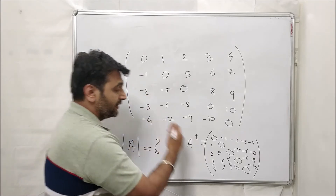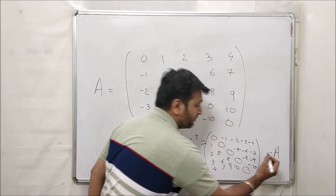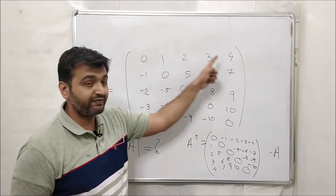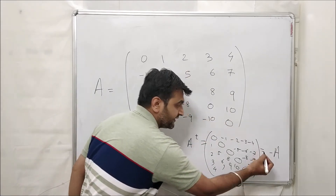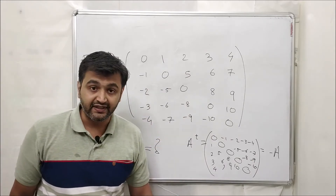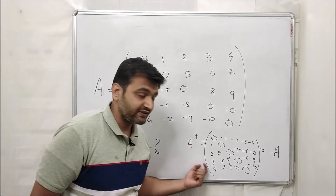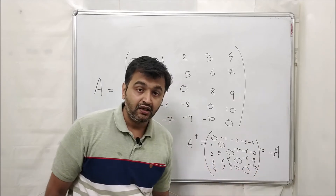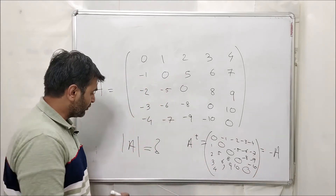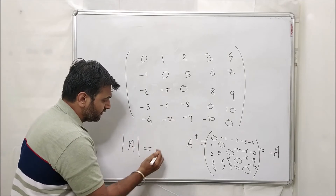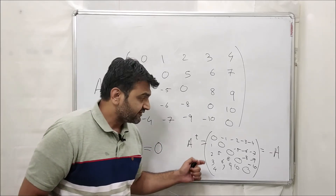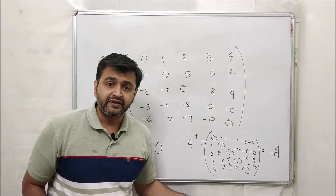If you multiply A by minus sign, the entries flip sign, and this equals Aᵀ. So this is a skew-symmetric matrix — when I take the transpose I get the negative of A. And the determinant here is zero.